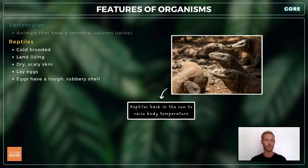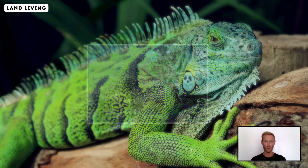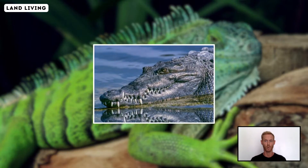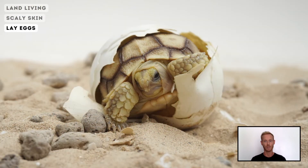Reptiles are also cold-blooded and therefore use their environment to stay warm or keep cool. They're land animals, although some spend time in water. They have dry scaly skin to reduce water loss and lay eggs which usually have a tough rubbery shell.